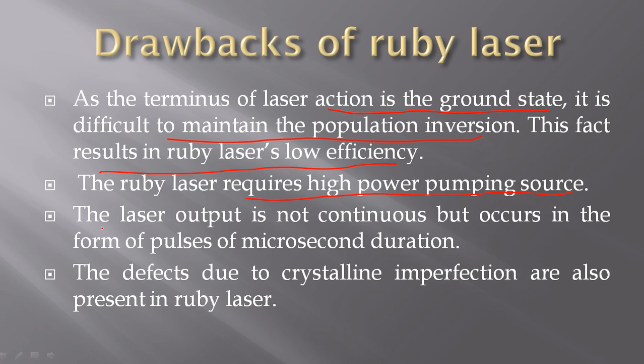The major disadvantage of Ruby laser is that the laser output is not continuous, but occurs in the form of pulses of microsecond duration — as discussed in the spiking of Ruby laser. Also, because Ruby is a crystal, defects due to crystalline imperfection are present in the Ruby laser.